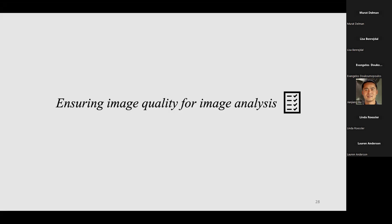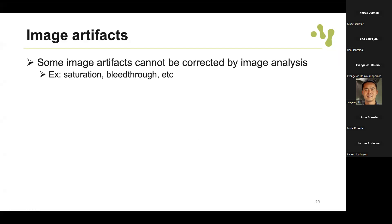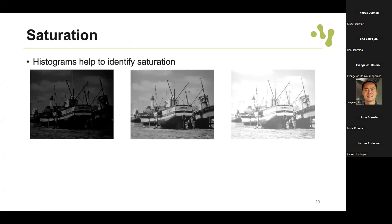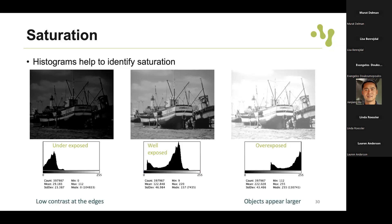This was some basic concepts on how to interpret and visualize images. Another important topic is how to ensure image quality for image analysis - you may have covered some of these topics during the course. Here I'm going to relate what we can do at the level of image analysis, meaning after acquisition. Some artifacts cannot be corrected after acquisition and must be corrected during image acquisition - that's the case for saturation and bleed-through. Histograms help identify saturation.